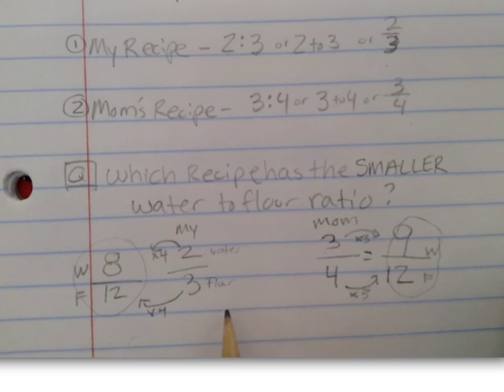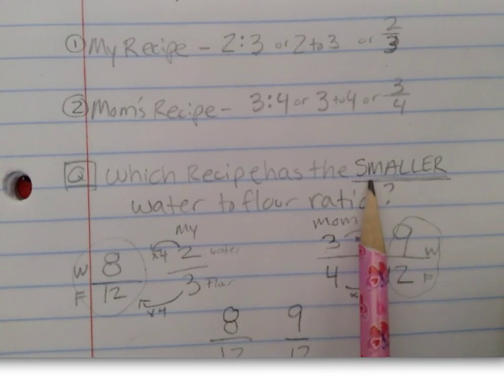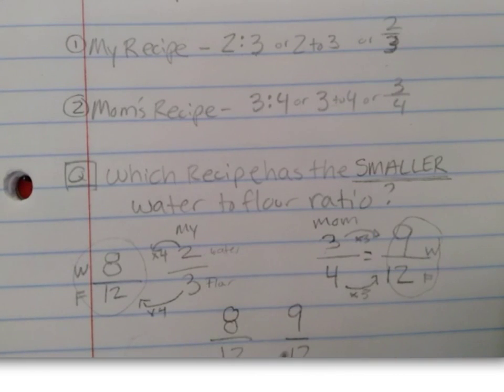Now, I'm able to put both of these different ratios side by side, and I can see that I do have one ratio that is larger than the other. Since my question is I'm trying to find out which has a smaller ratio, I want to find which of my numerators, or my amount of water, is smaller if the flour amounts are the same.